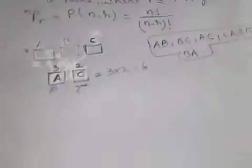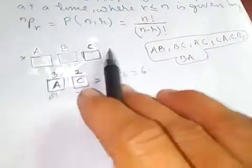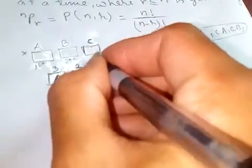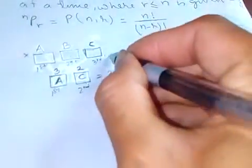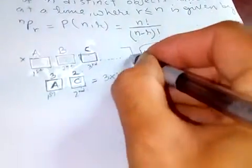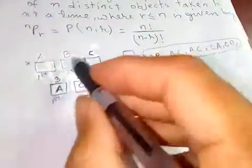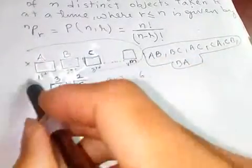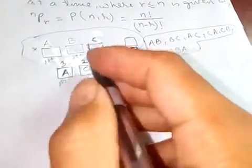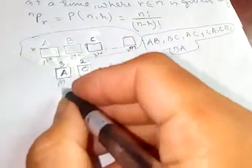Now consider that this is for n objects, with n boxes — first, second, third, up to r boxes. For r boxes, we can fill the first box in n ways.